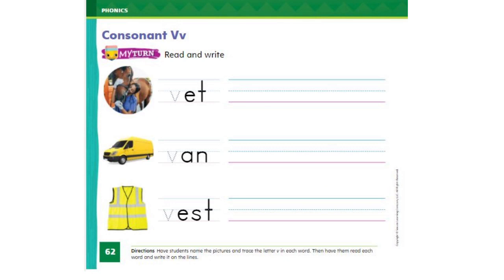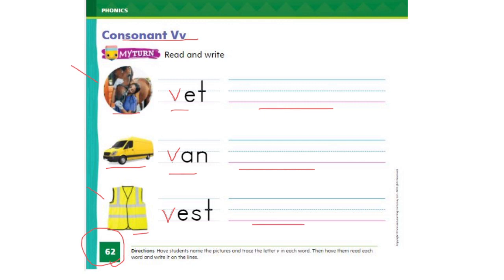On page number 62 for consonant V, we need to look at the pictures, read the words, and write them on the lines. The first picture is the doctor who takes care of animals — a vet. Trace V in vet and write the word vet on the line. This is a van — write it on the line. And the last picture is a vest — write the word vest on the line. When you finish your work, take a picture of it and send it to your teacher. Have a good day!